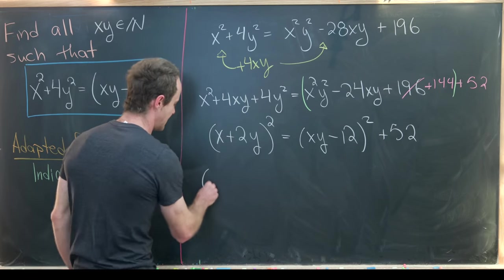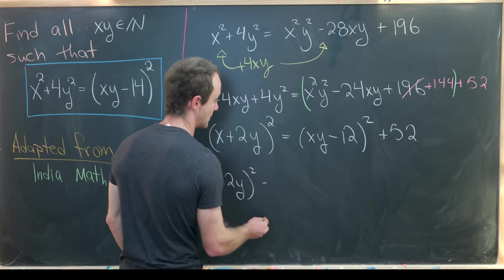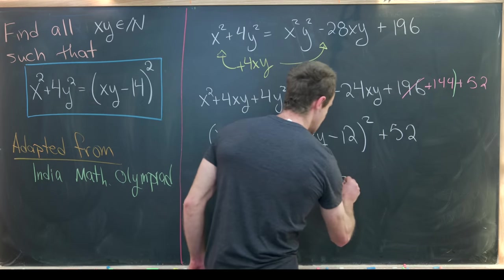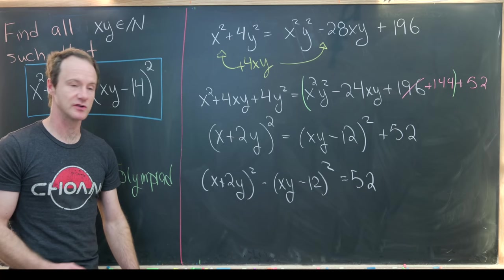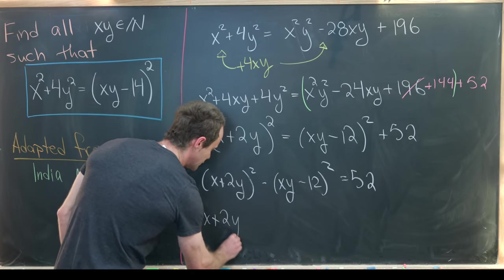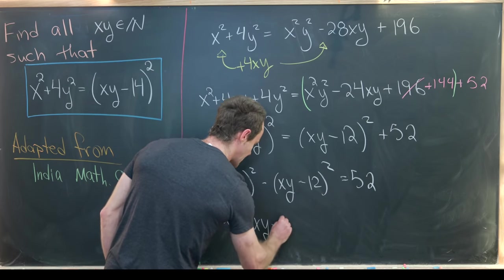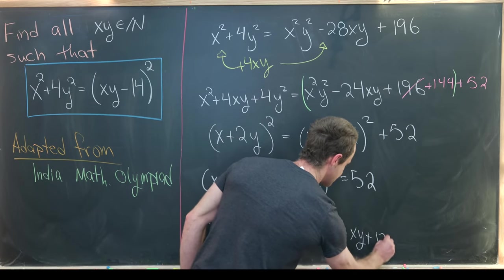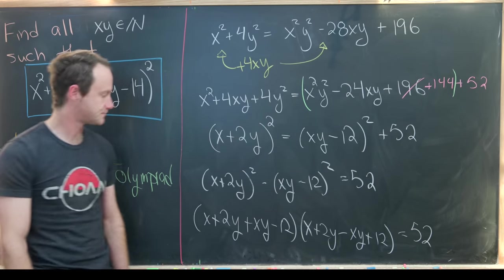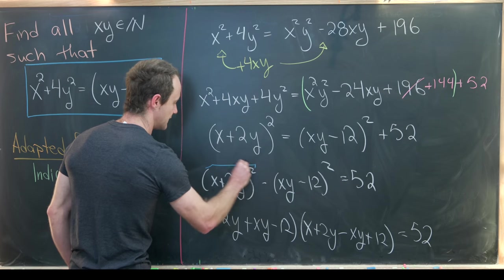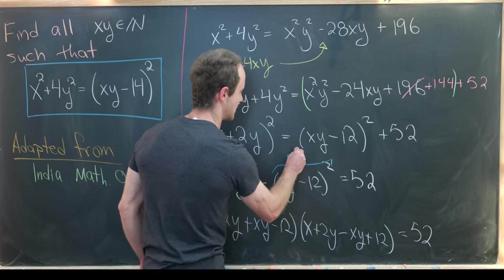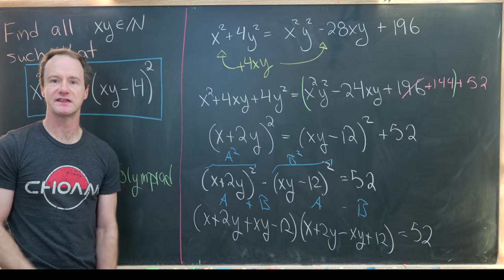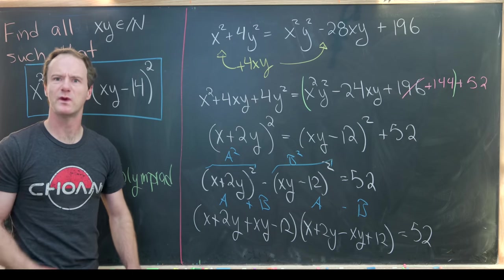Now let's move this over and then we'll see that we have a difference of squares on the left hand side of the equation. So in this case it's x plus 2y squared minus xy minus 12 squared equals 52. Using the standard difference of squares factoring we see that x plus 2y plus xy minus 12 times x plus 2y minus xy plus 12 must equal 52. So just to reiterate, think about all of this as being capital A squared, all of this is being capital B squared, and here we have a plus b and here we have a minus b. So again the standard difference of squares factoring.